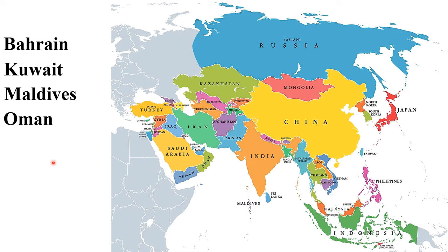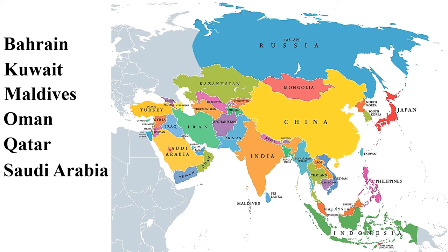Oman is another country in the Middle East with no permanent rivers. Qatar is another country in the Middle East and it has no permanent rivers in its territory. Saudi Arabia is, in fact, the largest country with no natural permanent rivers — it is the largest country in the Middle East. United Arab Emirates is also a country in the Middle East with no permanent rivers. Yemen is another country in Asia with no rivers.